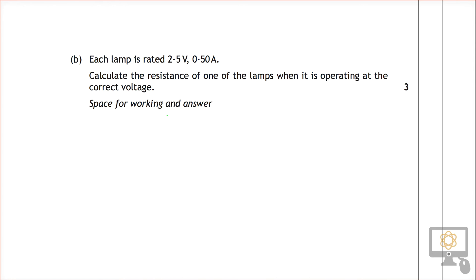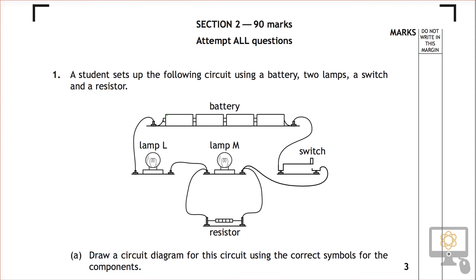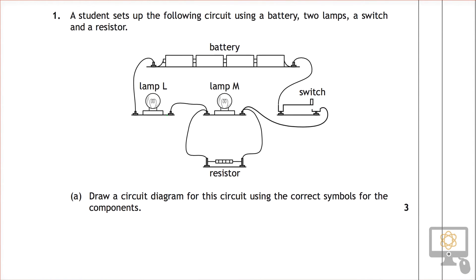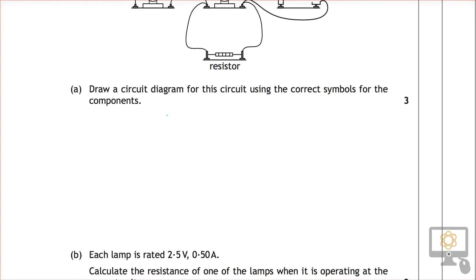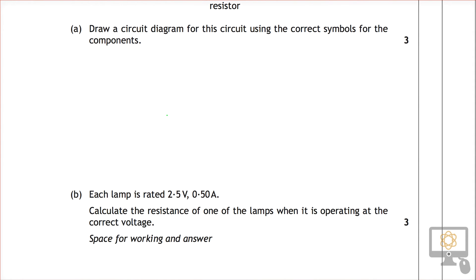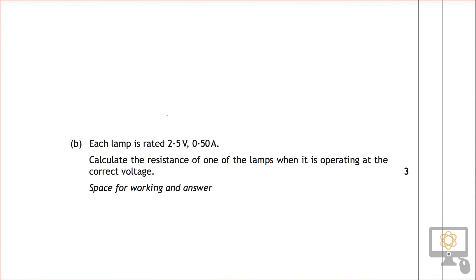I'll be looking at question 1b of the National 5 2015 physics paper. This question relates to the diagram where we've already drawn the circuit diagram in question 1a. The question says that each lamp is rated at 2.5 volts and 0.50 amps. Calculate the resistance of one of the lamps when it is operating at the correct voltage. The correct voltage of these lamps is 2.5 volts.